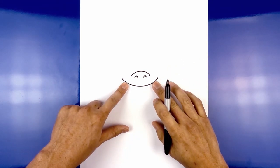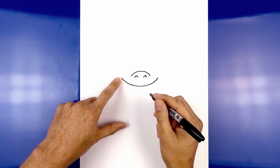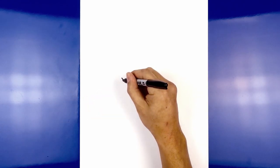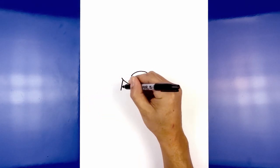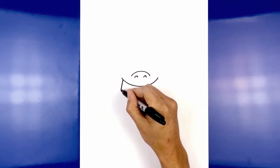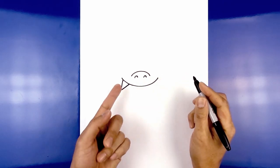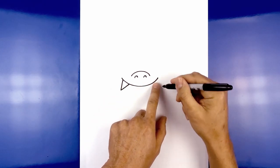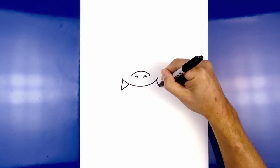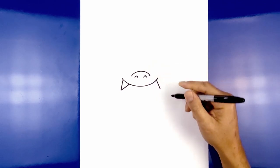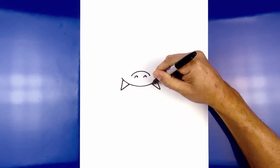Now we're going to add two sets of fangs on either side. Starting on the left we're going to step in from the end, draw an angled line coming down and out, then pull that back in. Let's take that and flip it over on the right — starting up here we're going to angle down and out, and then pull that back in.